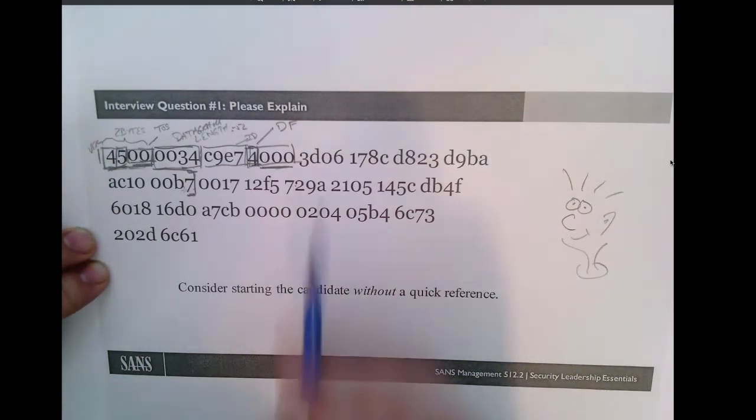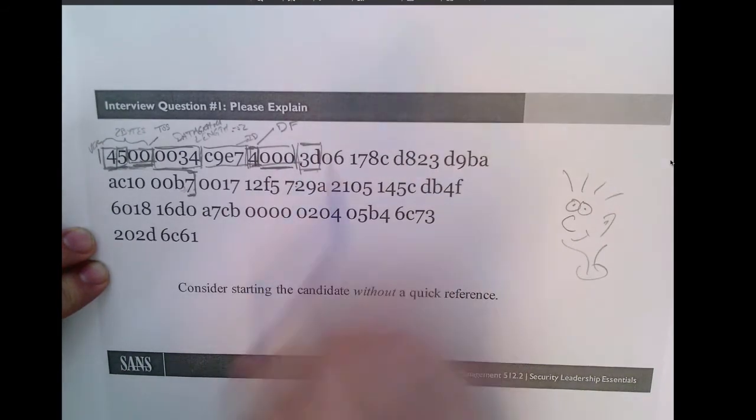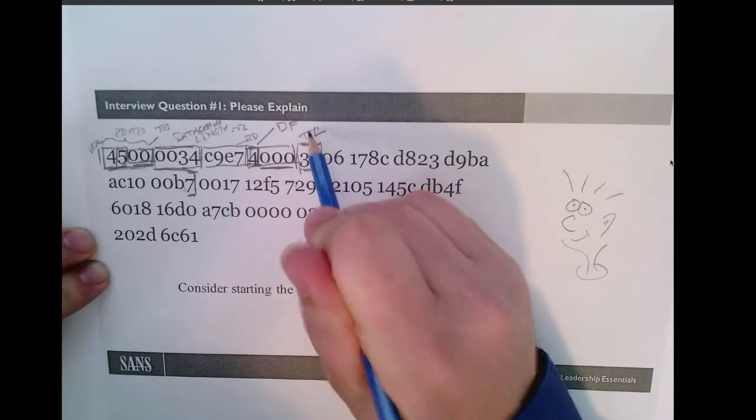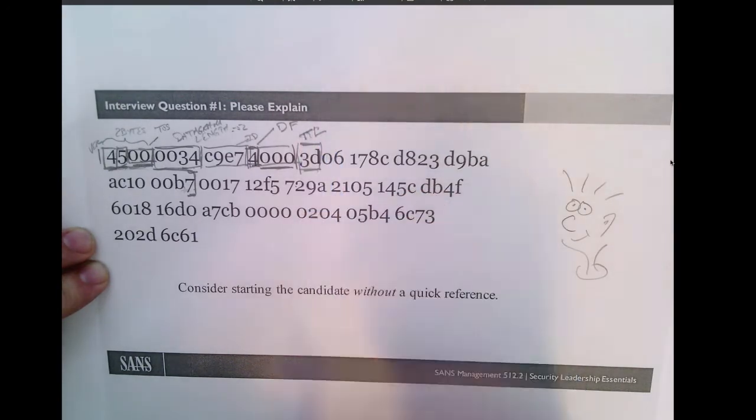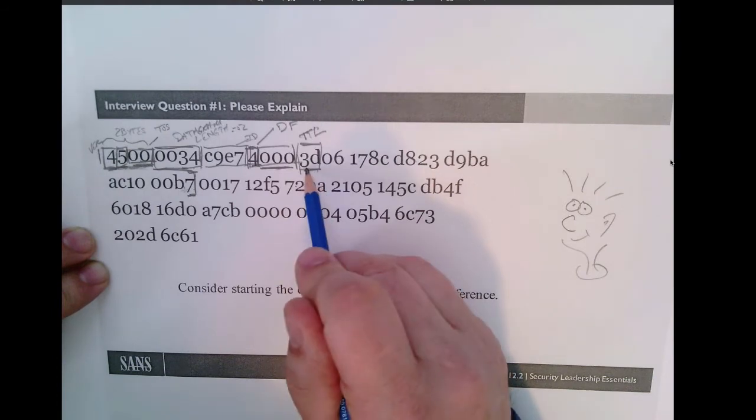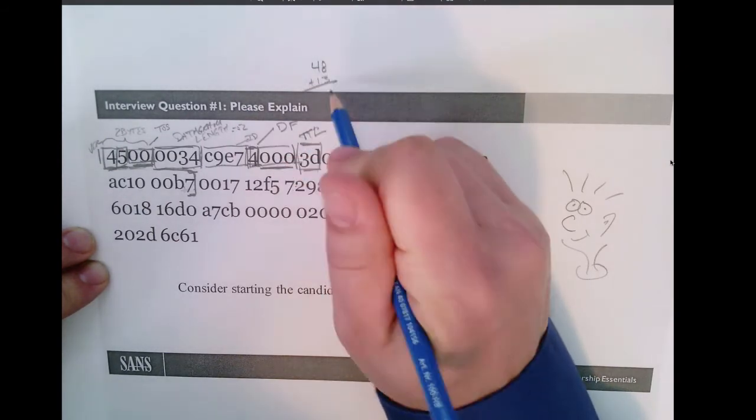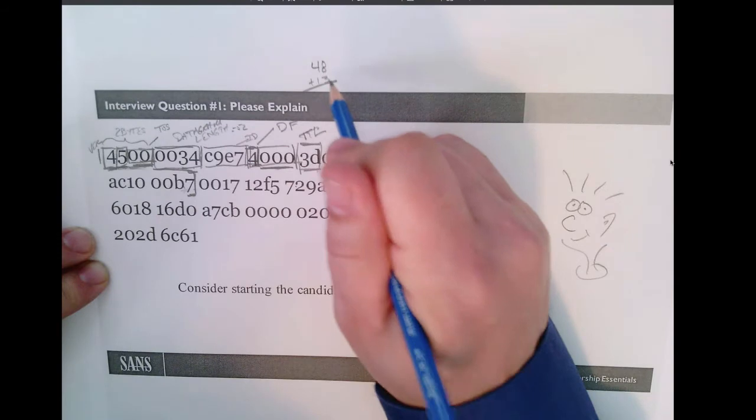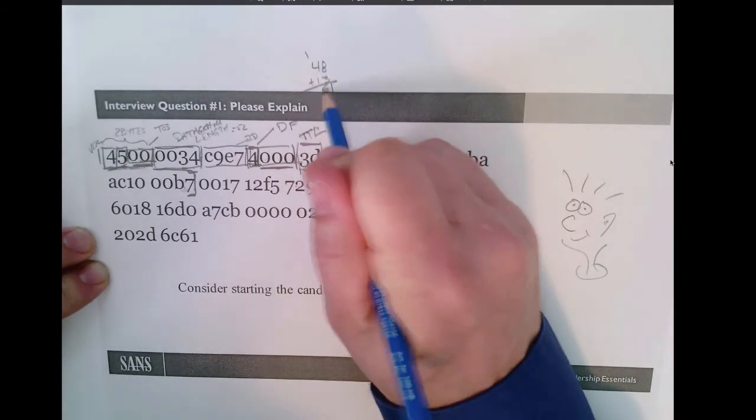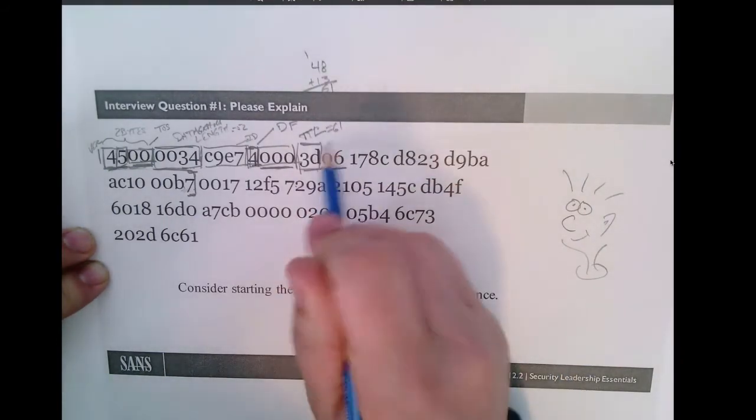The next two fields are found in this next piece, and they're each one byte long. So the first one, just one byte, represents the time to live. So how many hops can this go? How many more routers can this go through? I can see that we have a 3D here. So let's see, A is 10, B is 11, C is 12, D is 13, and we have the 3 here. So it would be 48 plus 13. So if we do the math on that, let's see, 8, 9, 10, 11, carry the 1, 4, 5, 6. That would be a time to live of 61, followed by the embedded protocol header.